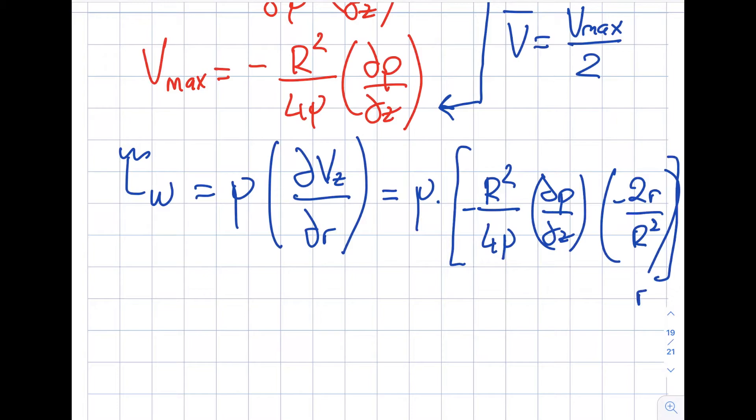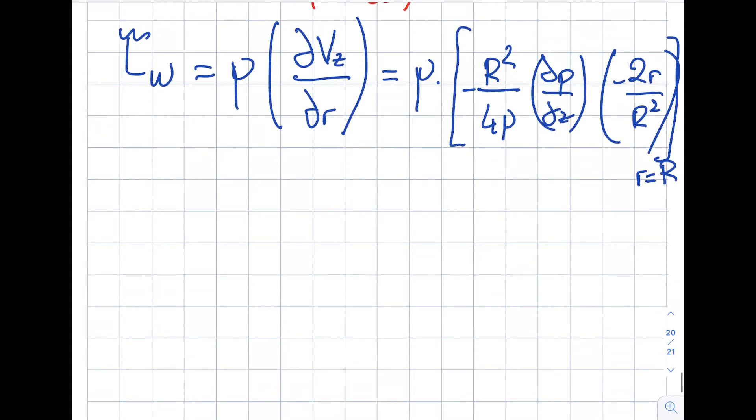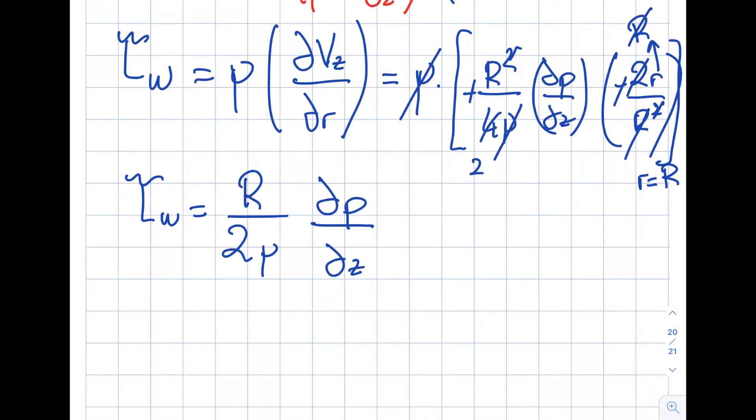If you look at it, these are constants and this is gone, so I have negative sign, negative. So this is going to be 2r divided by capital R². So I will simply write it down. It's going to be R²/(4μ) del P/del z times that term. As I mentioned to you, it becomes minus 2r/R². And obviously, τ_wall, where is τ_wall defined in terms of the variable? r is equal to capital R.